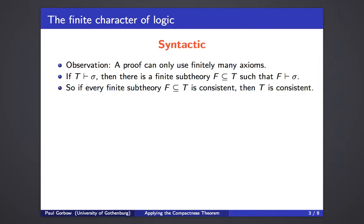What the compactness theorem boils down to is really the finite character of logic. The basic observation here is that proofs are necessarily finite, so a proof can only contain finitely many axioms. In particular, if T is the theory that proves the sentence sigma, then there must be a finite sub-theory that proves sigma, because the proof could only have used finitely many axioms — just take those finitely many axioms to be F.